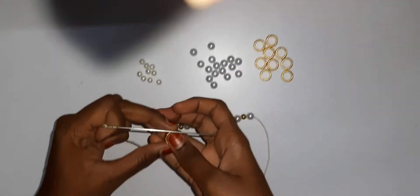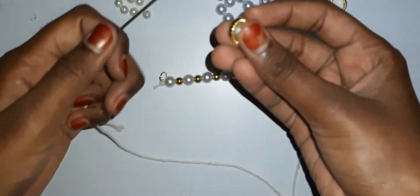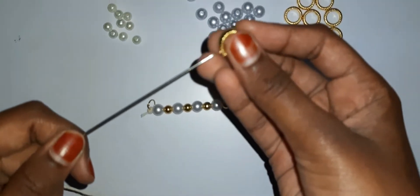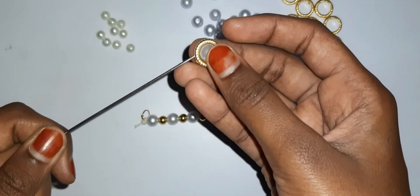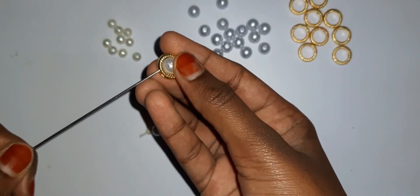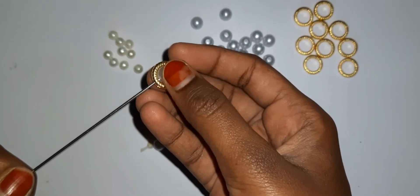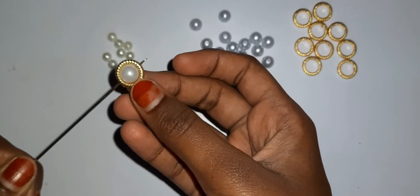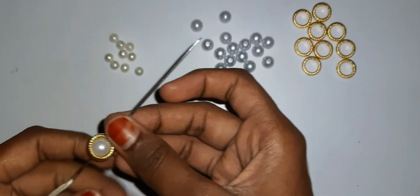Now first you will put a ring bead and inside it you put this silver bead. You need to check the correct size or a little bit lesser size you need to take, and then you need to insert it like this.